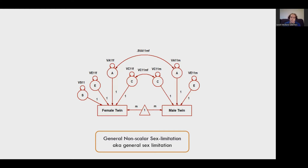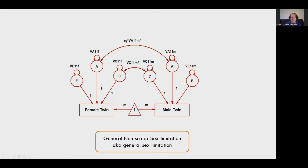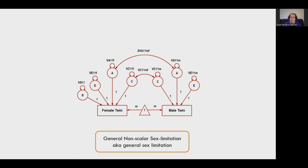When we have this model and want to test for qualitative differences, we drop the specific effect, or if using the alternate parameterization, we fix the correlation. Once we've done that, it drops back to a quantitative model, removing the qualitative component. After that, you would go ahead and potentially look to see whether you can equate your estimates of A, C, and E between males and females. That's all I have to say about heterogeneity and sex limitation — please feel free to email or reach out if you have questions. Thank you.